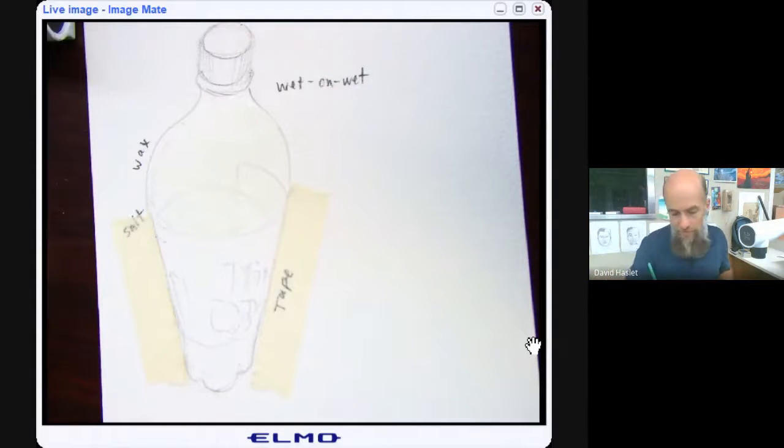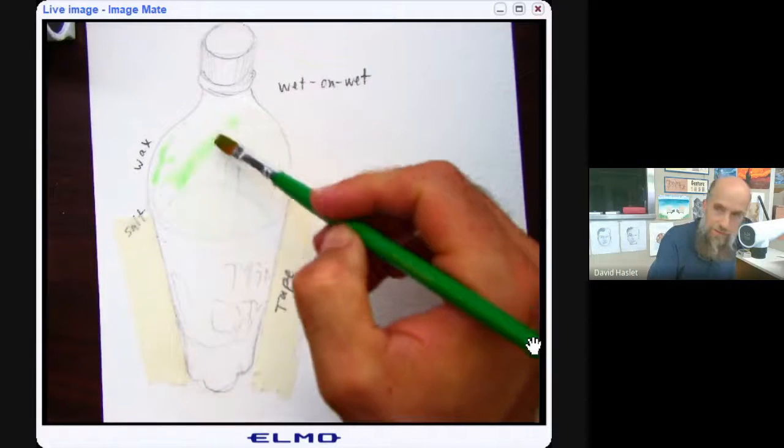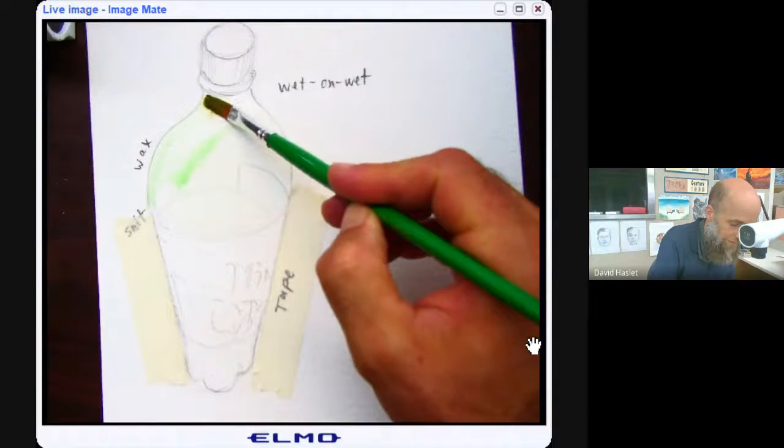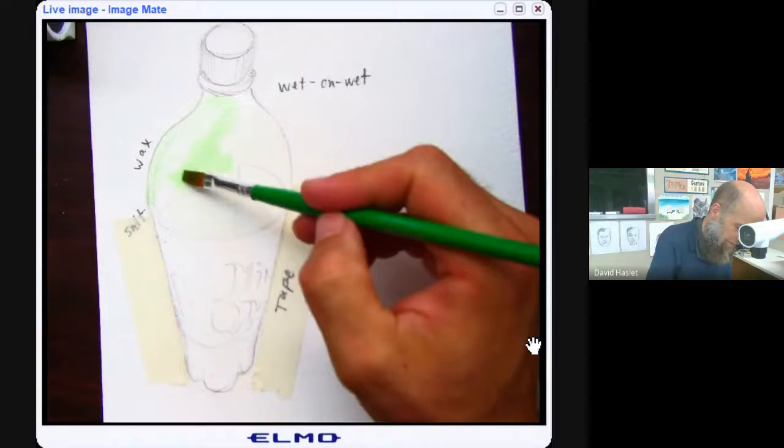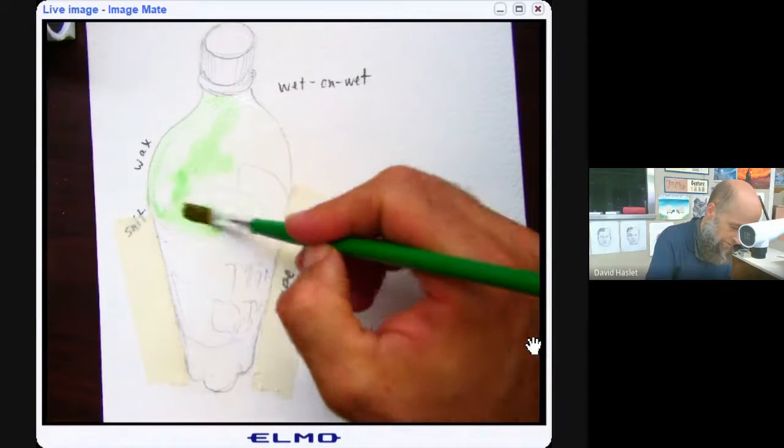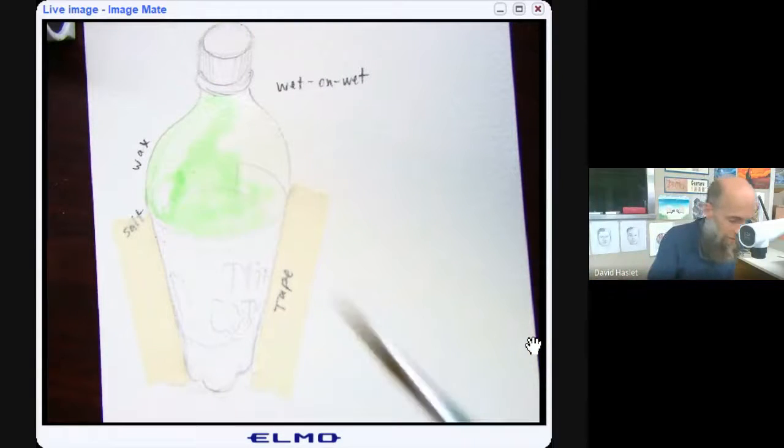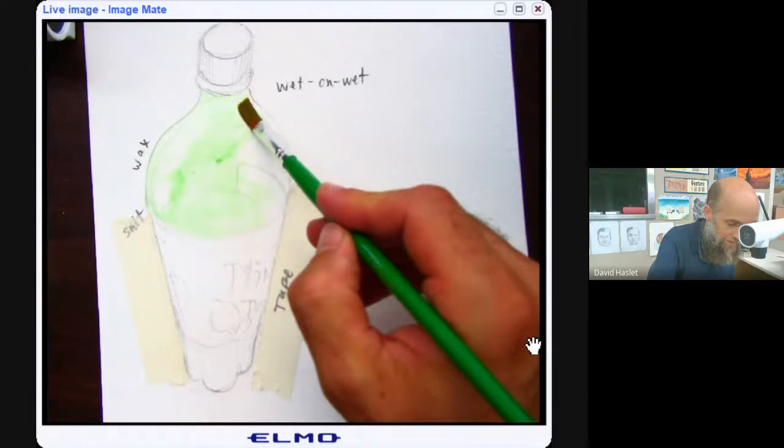I'm going to take some of this yellowy green that I've mixed up with a plastic bottle color and I'm just going to touch it and it's going to travel across. Now cool colors tend not to travel as much as warm colors like red, but that's all right. As long as I know that I can prepare for it. Here I'm pushing around the color on that wet surface. That makes it the wet-on-wet technique.